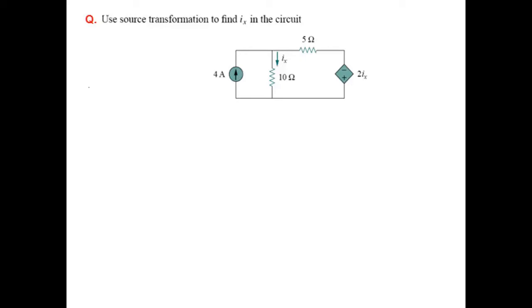Another example. Looking at this circuit, since this is the branch through which we need to find the current, we will not touch this branch. Therefore, we will not convert this into a voltage source.